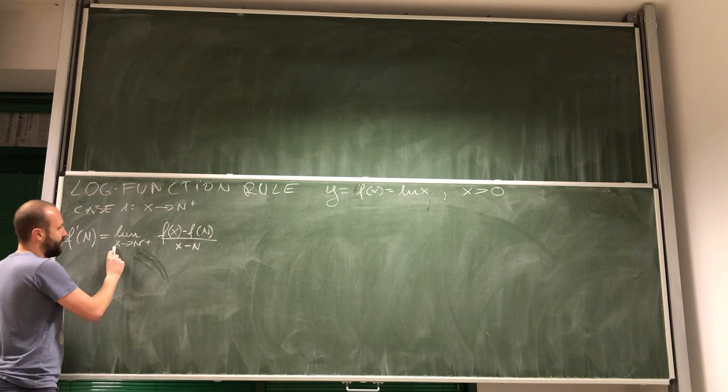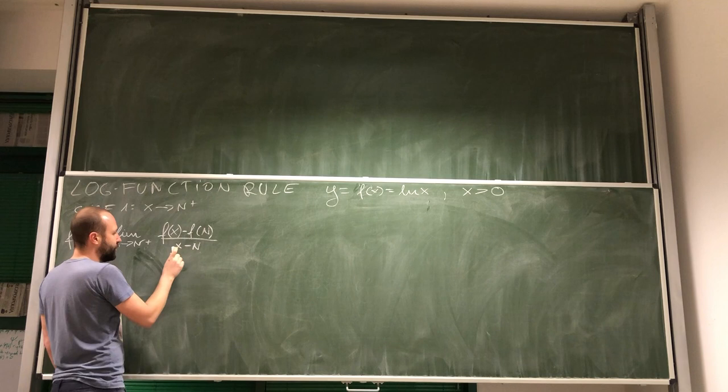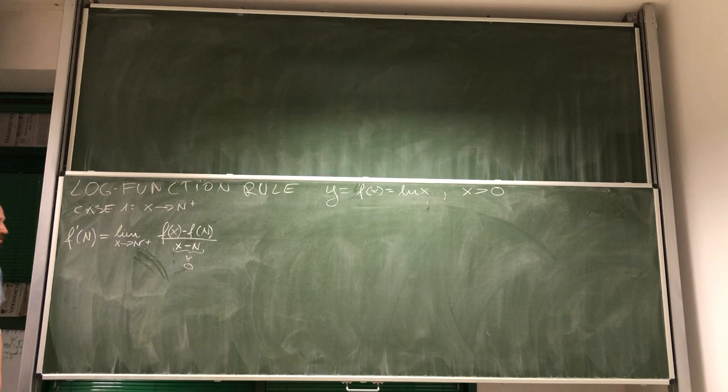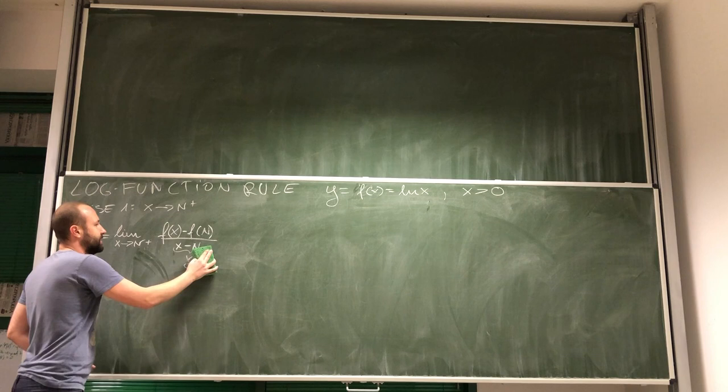What does it mean that x approaches n from the right-hand side? It means that x is bigger than n. So no matter how small the distance between those two, x minus n will always be bigger than zero — we will always get a positive value. This is important because in later steps we will use this expression inside the logarithm, and inside the logarithm we need positive values.